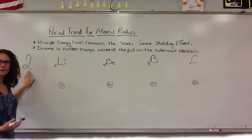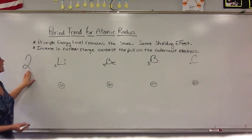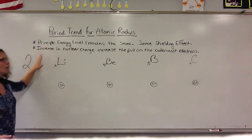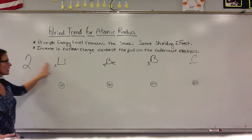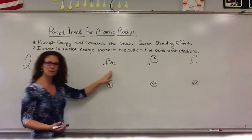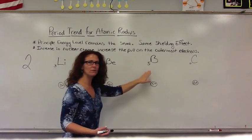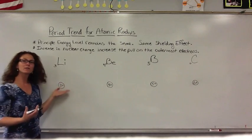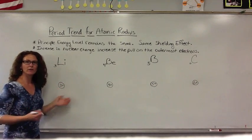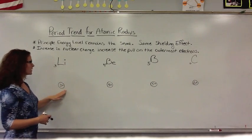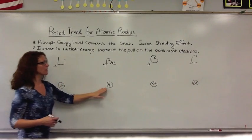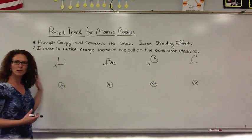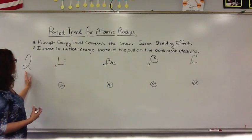All of the elements in Period 2 are actually filling the same principal energy level — they are all currently filling the second energy level. So therefore, they in turn have the same shielding effect. I've just drawn the number of protons that each of these first four elements have in Period 2.